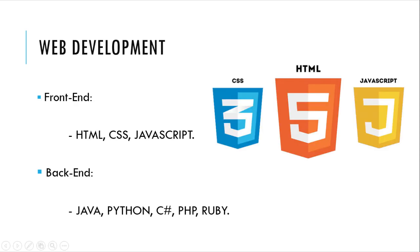Let me tell you what programming languages are used in each field. First, we'll look at web development. Web development is split into front-end and back-end. In front-end you will use HTML, CSS, and JavaScript — these are scripting languages. For back-end, you can choose any language like Java, C-Sharp, or Python.